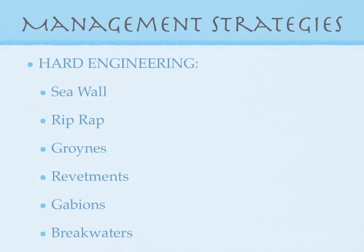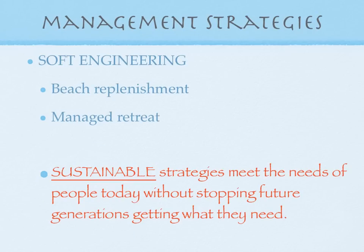Some management strategies then. These are hard engineering strategies: seawall, riprap, groins, revetments, gabions, and breakwaters. They're man-made structures built to control the flow of the sea and reduce flooding and erosion. Soft engineering schemes are set up using knowledge of the sea and its processes to reduce the effects of flooding and erosion — like beach replenishment and managed retreat. In beach replenishment, you're physically dumping more sediment onto the beach to make sure the waves can't impact the coastline. Managed retreat is removing an existing defence and allowing the land behind it to flood.